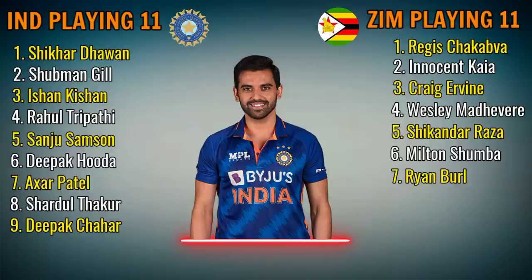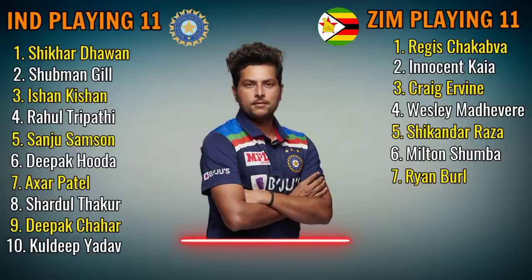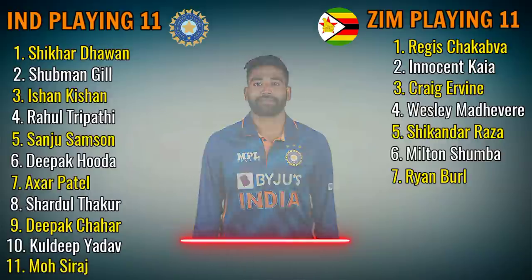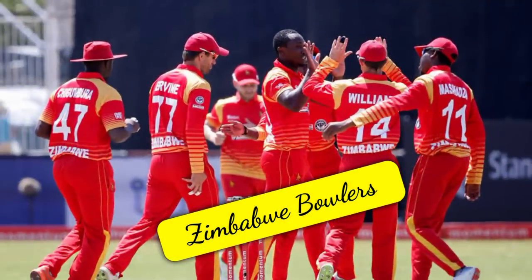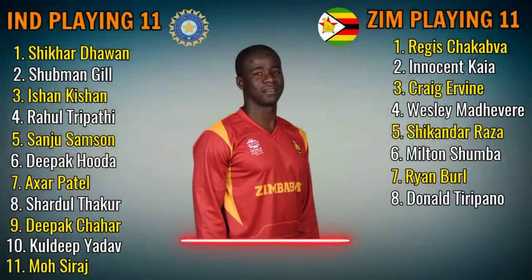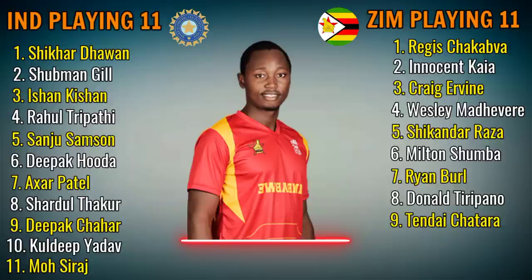India Team Bowlers continued: No.9 Deepak Chahar, fast bowler. No.10 Kuldeep Yadav, spin bowler. No.11 Mohammed Siraj, fast bowler. Zimbabwe Team Bowlers: No.8 Donald Tiripano, fast bowler.